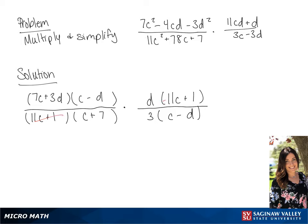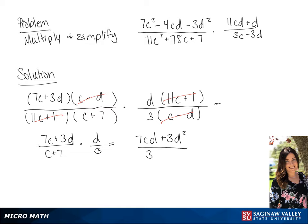Now we can simplify. We have (7c + 3d) over (c + 7) times d over 3. Our final answer is going to be (7cd + 3d²) over (3c + 21).